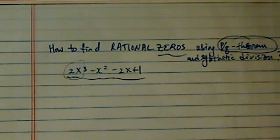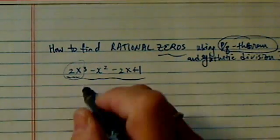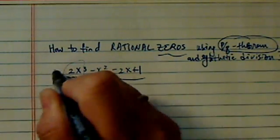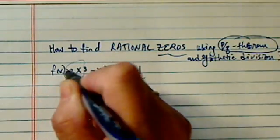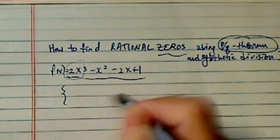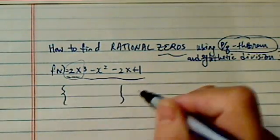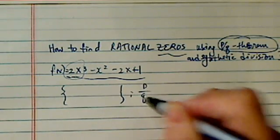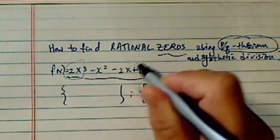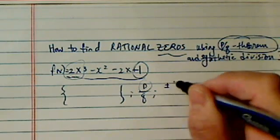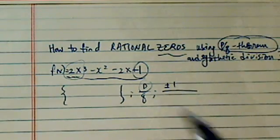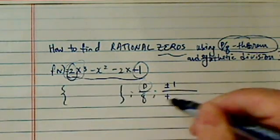Out comes this PQ theorem. So PQ theorem says, look, a solution for this whole set, if we call this f, lies in a particular set of numbers. And the particular set is P over Q, where P is factor of the constant, which is plus minus 1 here, and over the plus minus 2.